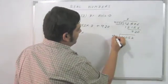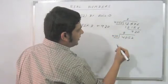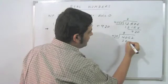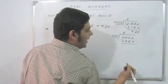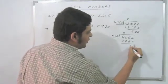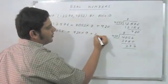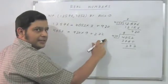4052 by 420, I think it goes 9 times, 3600 and 180 is 3780 and I get 272 as my remainder. So, 420 into 9 plus 272.